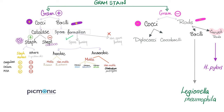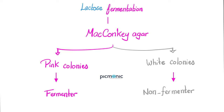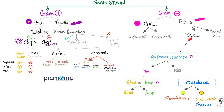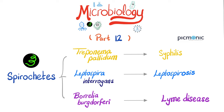More bacilli include E. coli and Klebsiella. More curved rods include Campylobacter jejuni and Vibrio cholerae. To determine lactose fermentation, we use MacConkey agar — pink colonies indicate lactose fermenters, white colonies indicate non-fermenters. If I am a gram-negative straight bacillus, the next question is: lactose fermenter or not? If yes, are you a slow or fast fermenter? If no, are you oxidase positive or negative, and can you produce hydrogen sulfide?